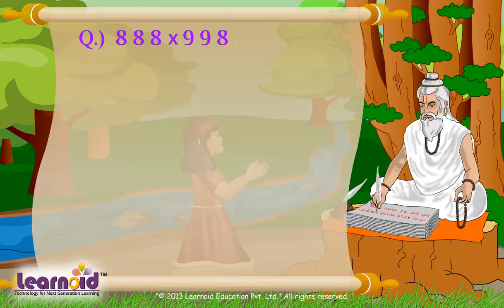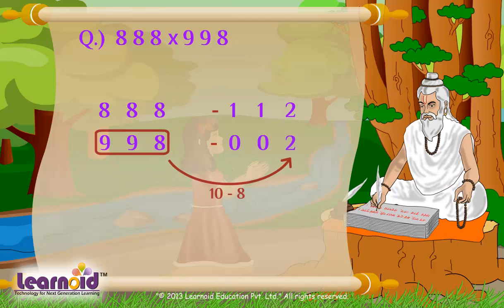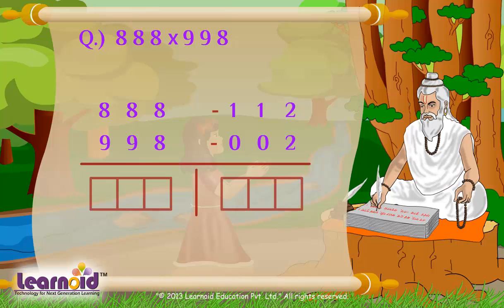Using Nikhilam Sutra, let's write deficiency of both numbers. For 888 it is 112, and for 998 it is 002. Now we will follow multiplication rule. Draw a line in between. We need 3 digits on right.